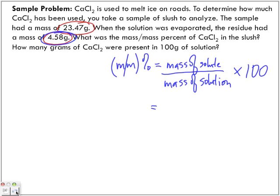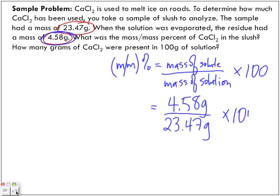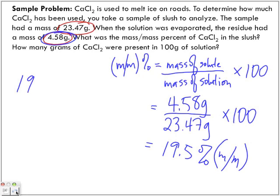We're going to divide 4.58 by 23.47 and multiply by 100, and we get 19.52% mass/mass. So that answers the first part of the question.